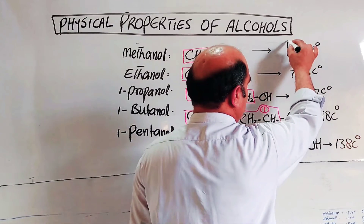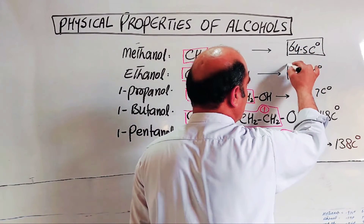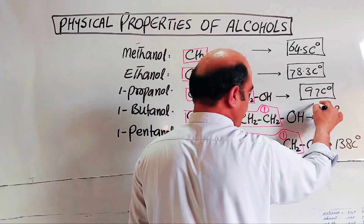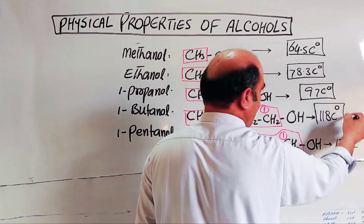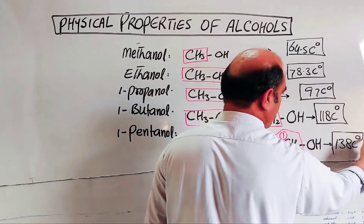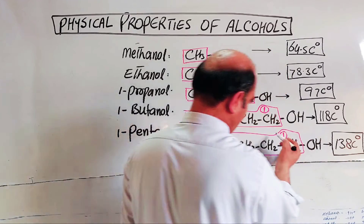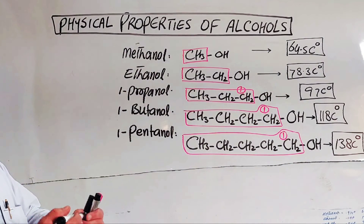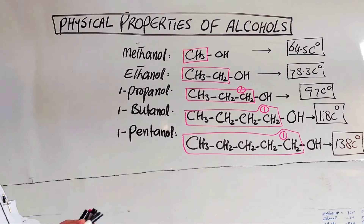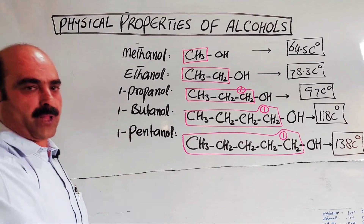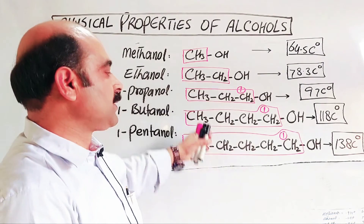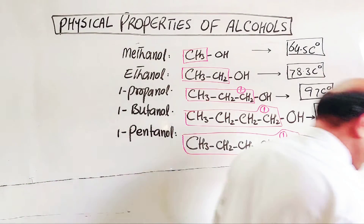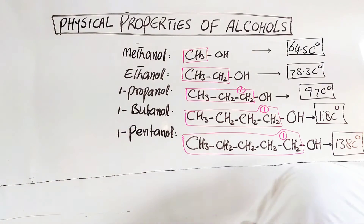So, students, you can see that the boiling point values increase with increase in alkyl portion length. This can be presented in tabular form. The boiling point values increase in normal order as carbon number increases.